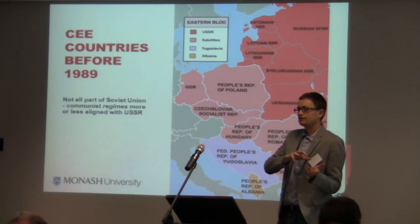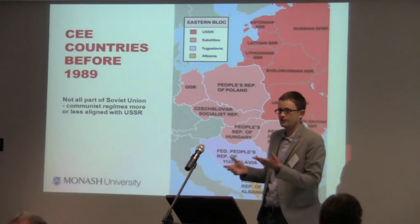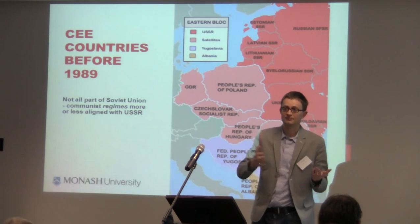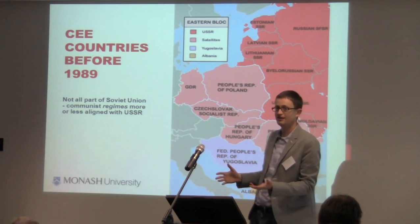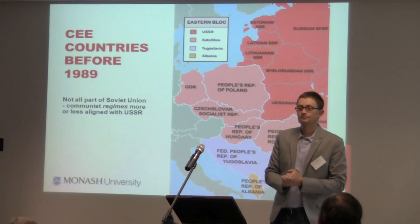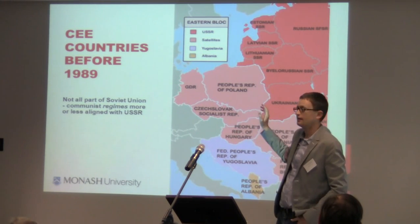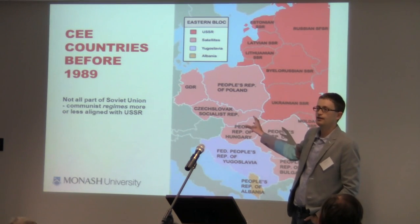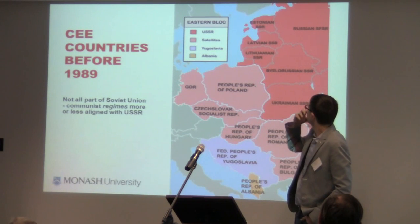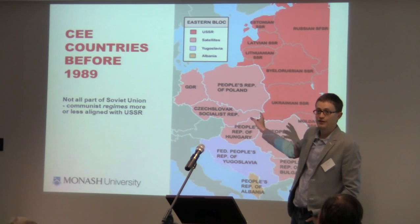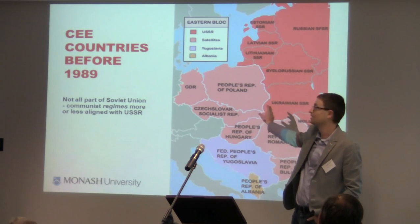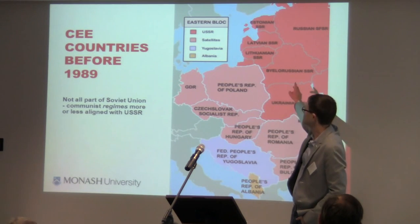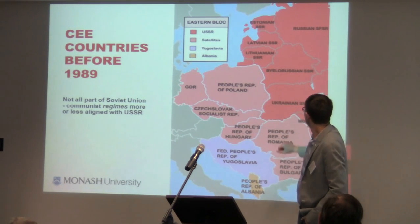Ewa already told you what communism was and where it came from — from Marx, then Lenin and Stalin. However, it is important to say that in the second half of the 20th century there were different types of communist regimes in Eastern Europe. The countries worst off were really part of the Soviet Union: the Baltic states — Latvia, Lithuania and Estonia — and also Belarus, Ukraine, and Moldova.